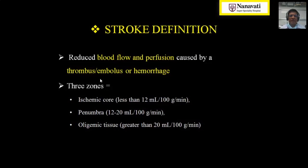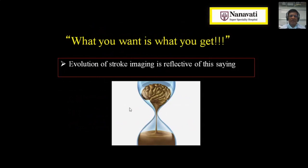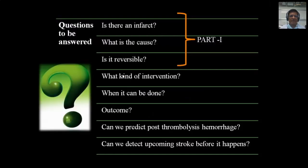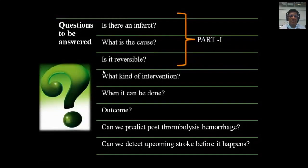There are three zones within the area of stroke: ischemic core, where the flow of blood is less than 12 ml per 100 grams of brain per minute; ischemic penumbra, where the flow is between 12 and 20 ml; and oligemic tissue, where the flow is more than 20 ml. In the last talk, we covered three questions about stroke on imaging: is there an infarct, what is the cause, and is it reversible? Today, we'll cover the other five questions.